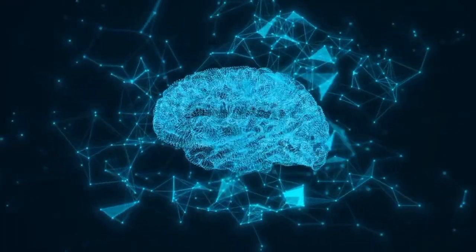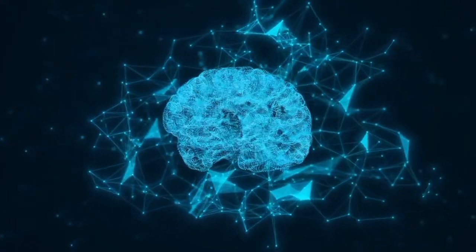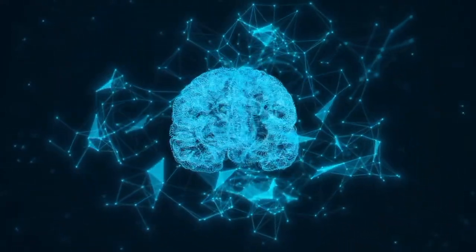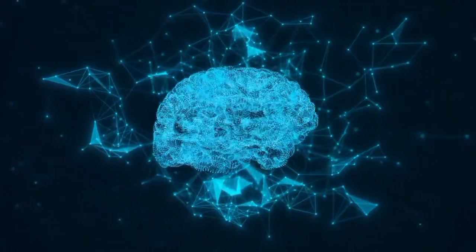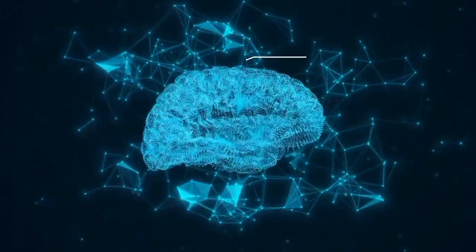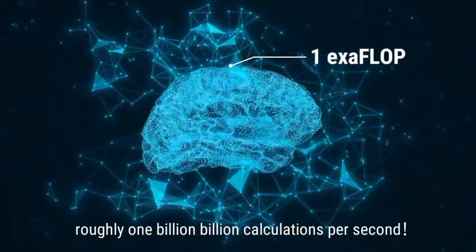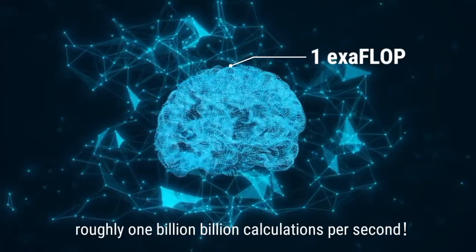In fact, our miraculous brains operate on the next order higher. Although it is impossible to calculate precisely, it is postulated that the human brain operates at one exaflop, roughly one billion billion calculations per second.